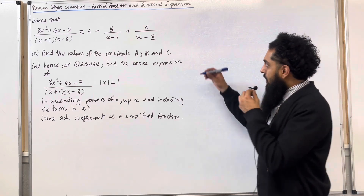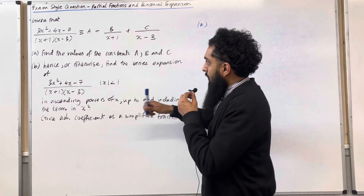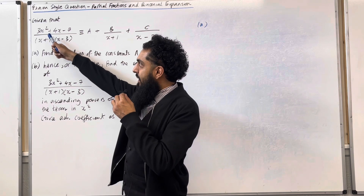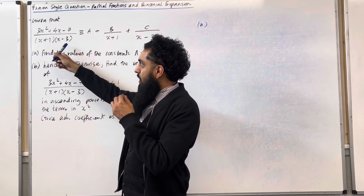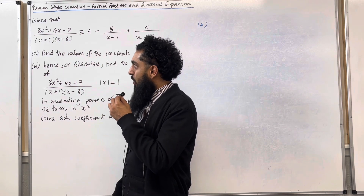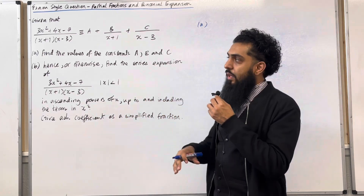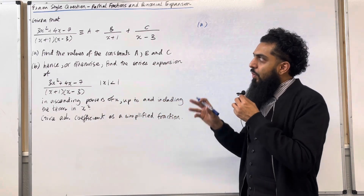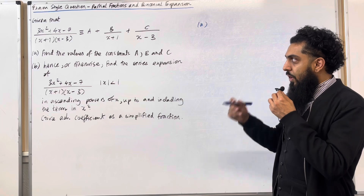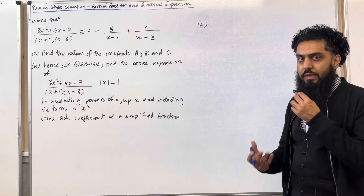Let's have a look at the solution to part A. The numerator in this fraction has a coefficient of x squared equal to 3. In the denominator, the coefficient of x squared is 1. Since 3 is greater than 1, we have an improper fraction. So before we split into partial fractions, we have to use polynomial division.